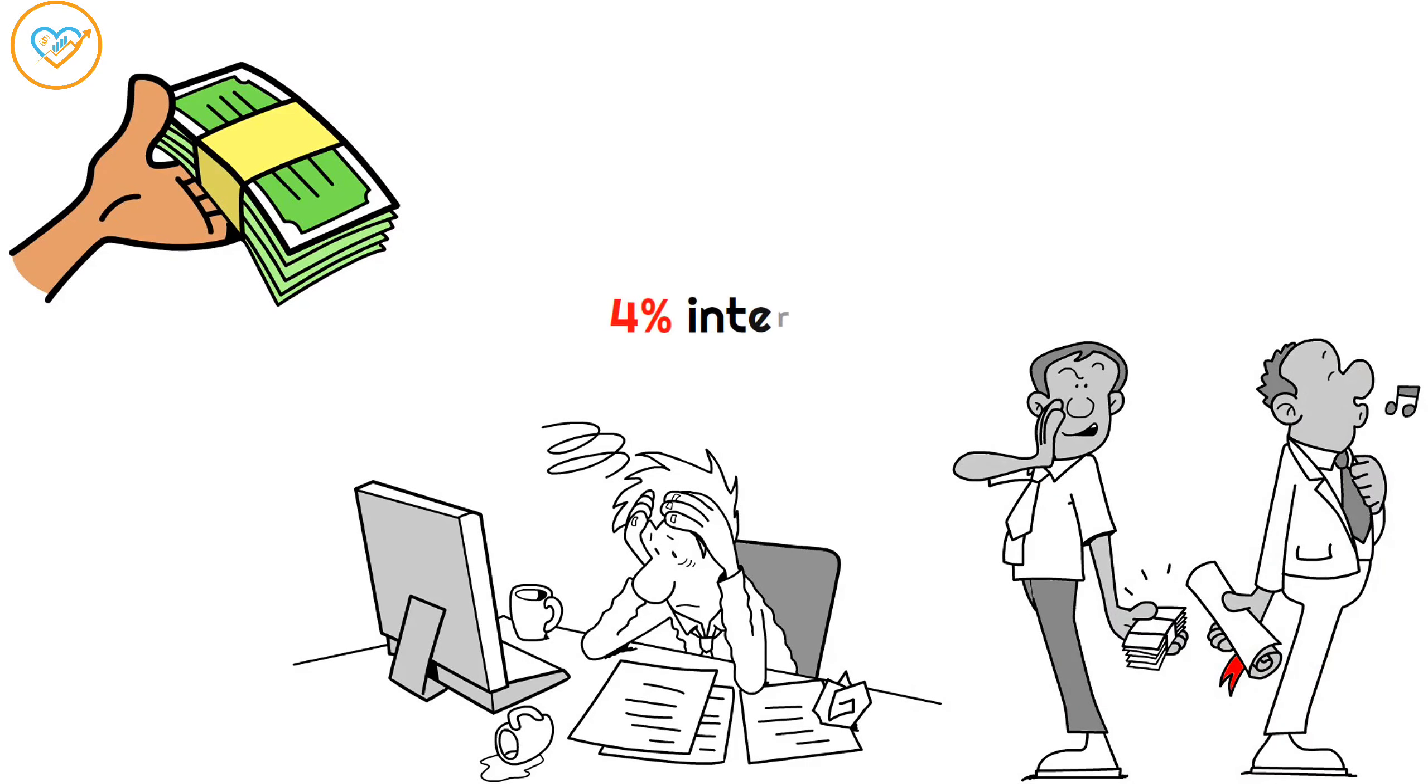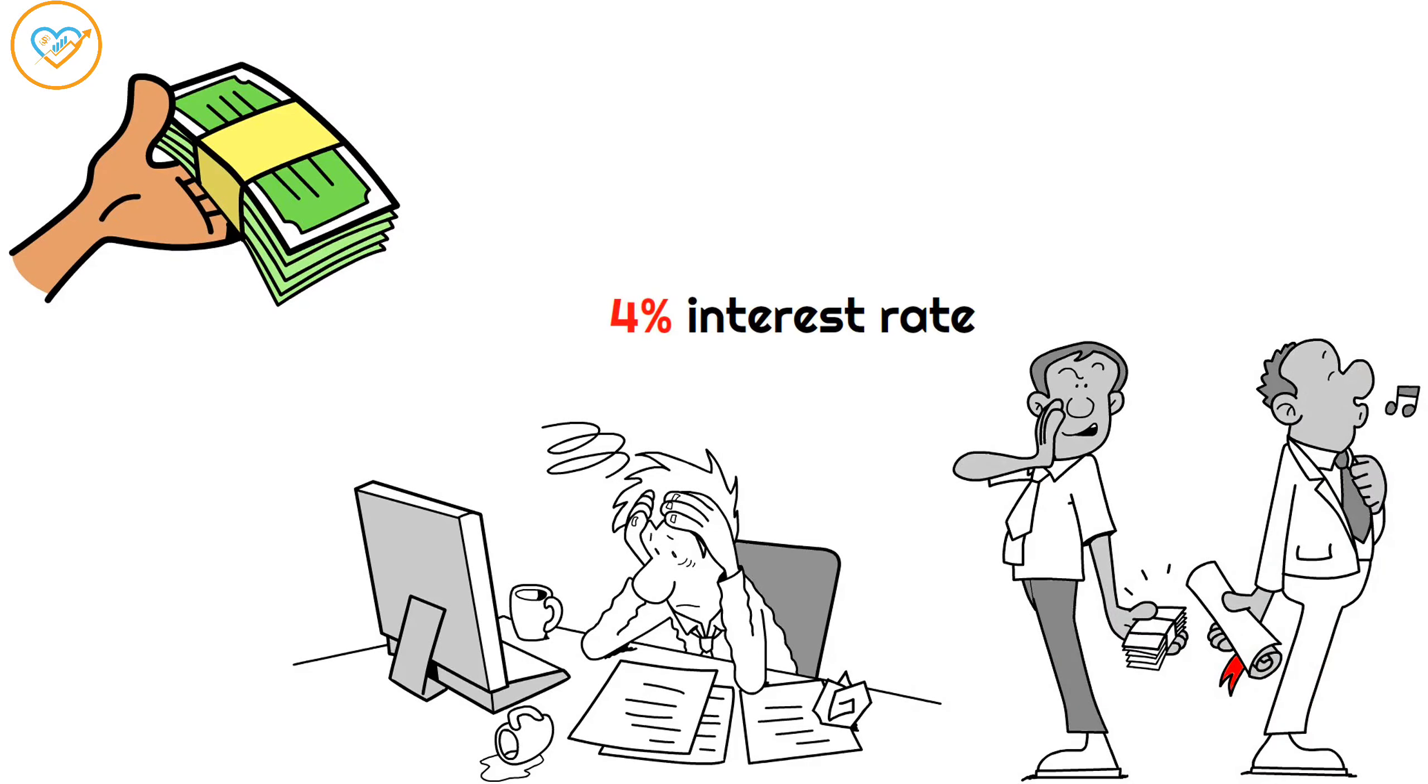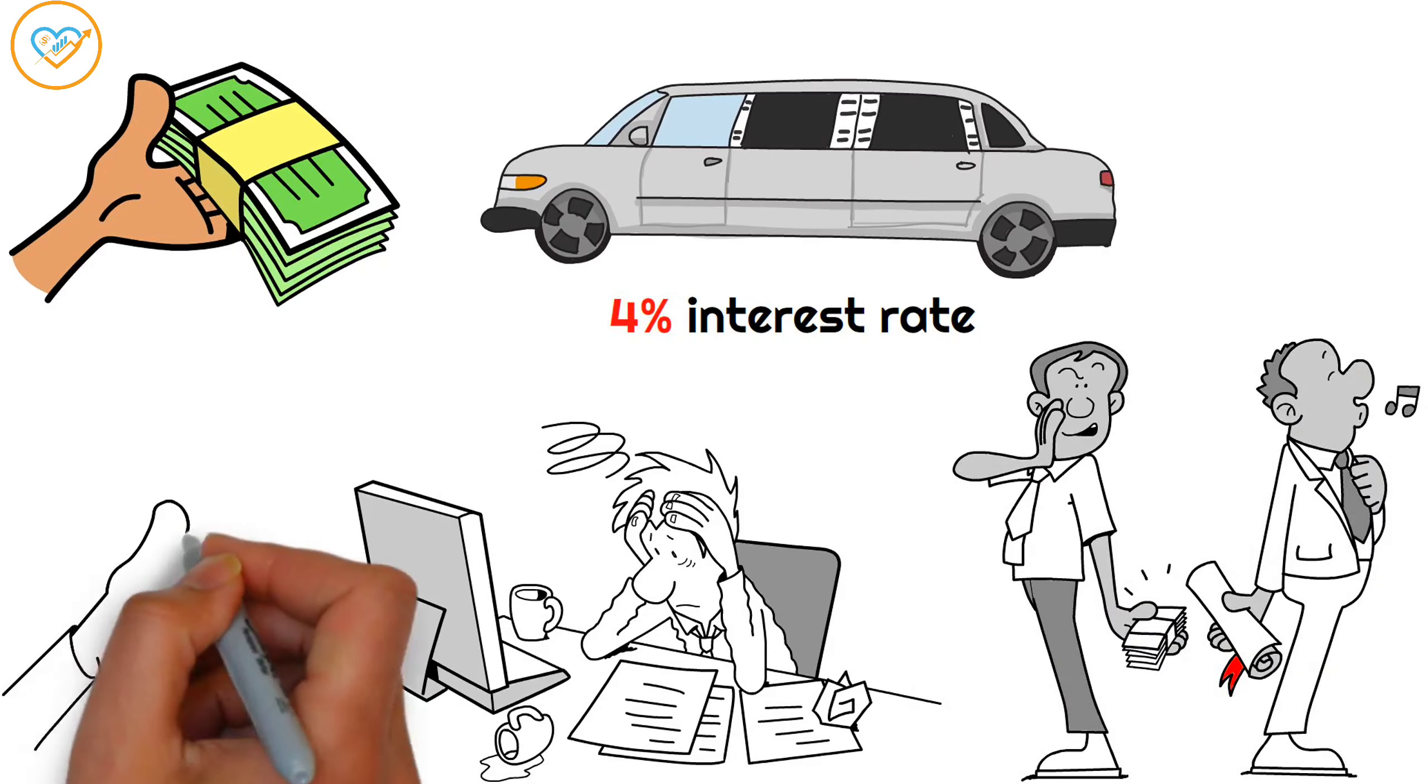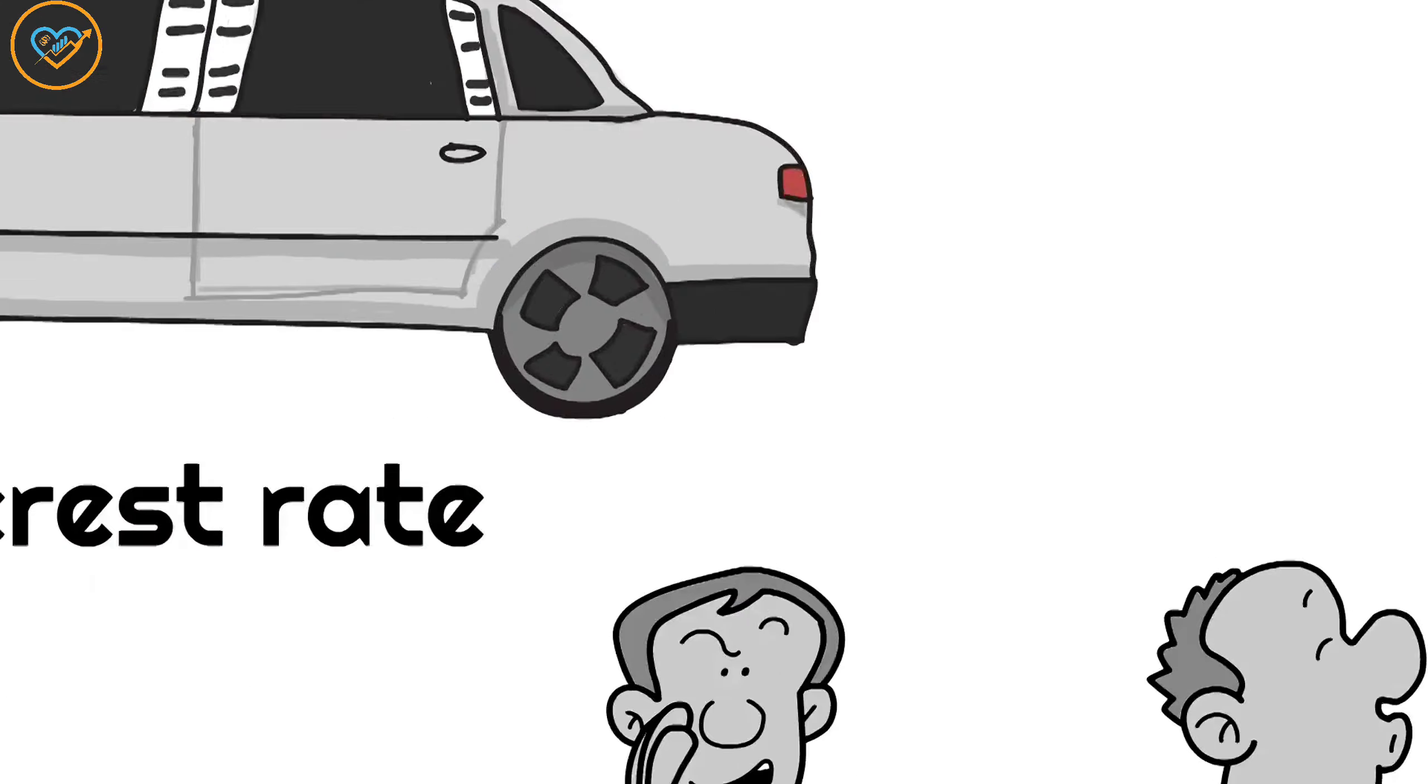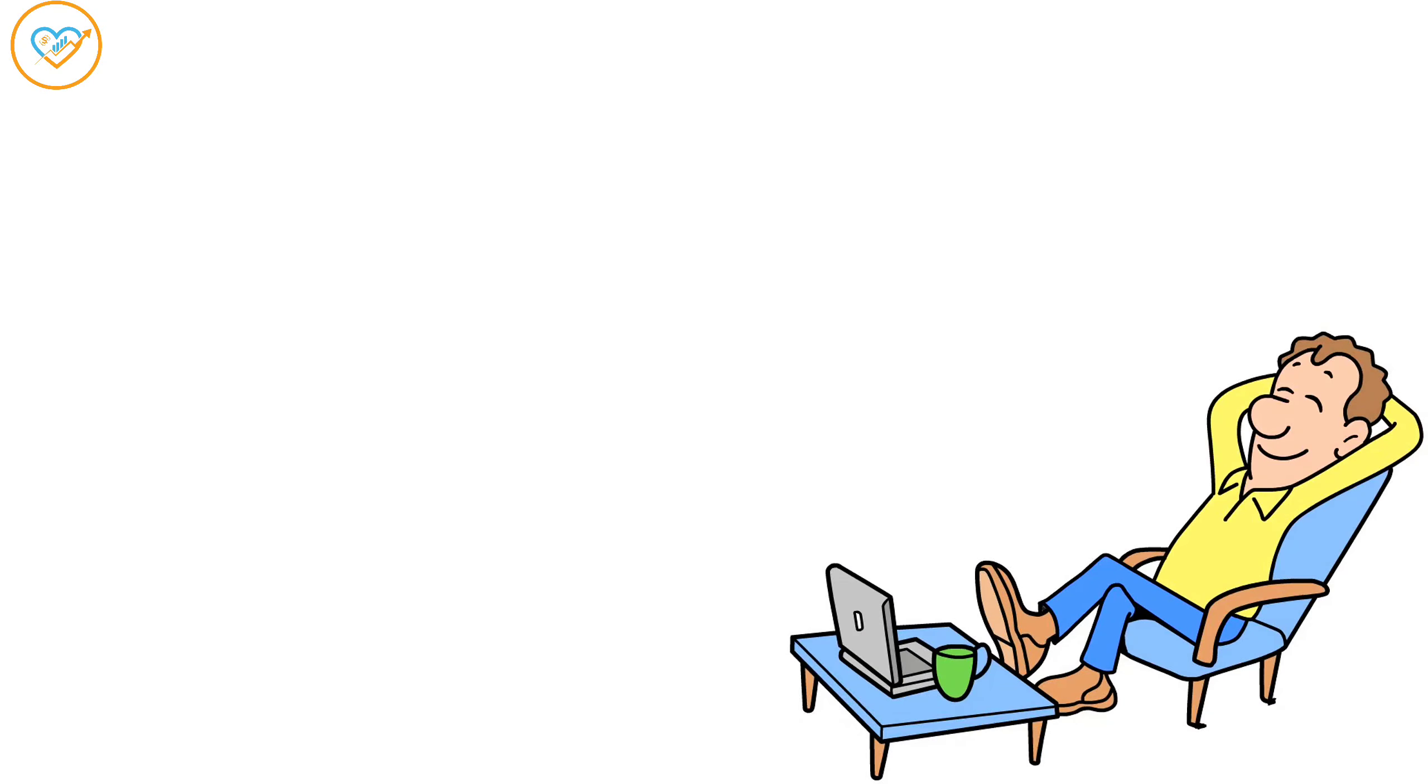For instance, if you have a loan with a 4% interest rate such as a car loan or mortgage, paying it off a year in advance translates to a 4% return by saving on future interest payments. This approach not only reduces financial burdens, but also frees up more cash flow for other purposes.